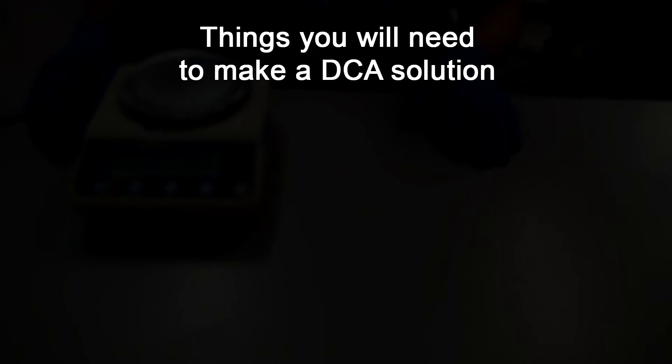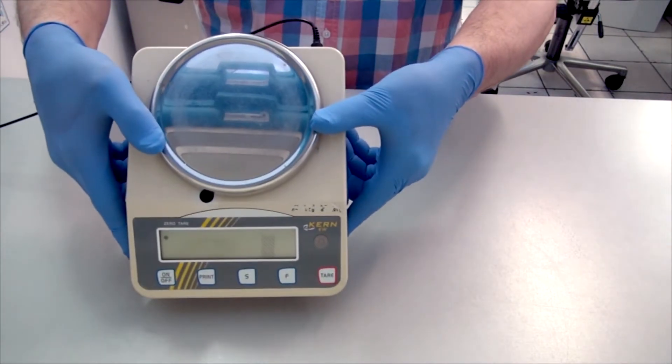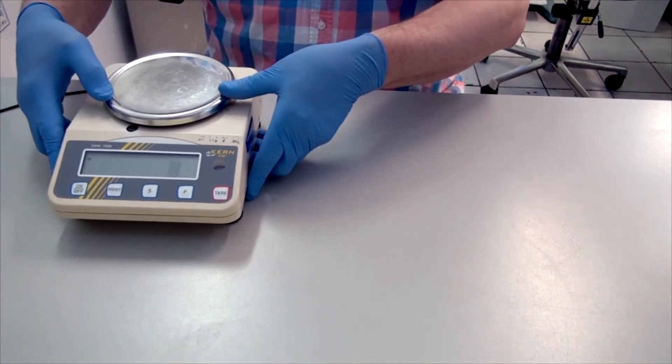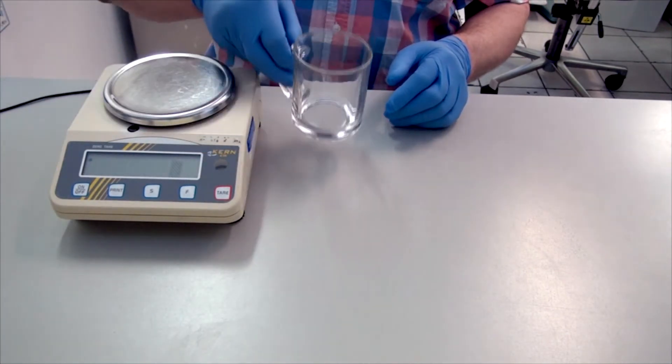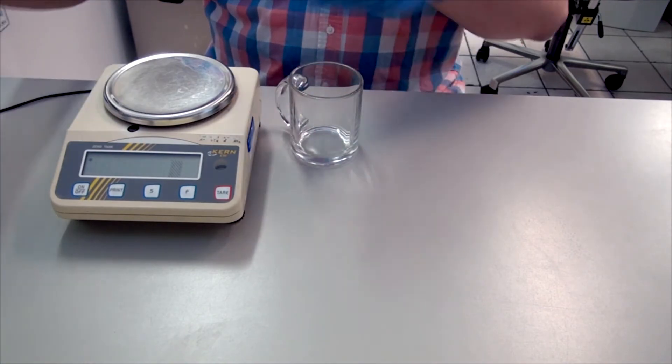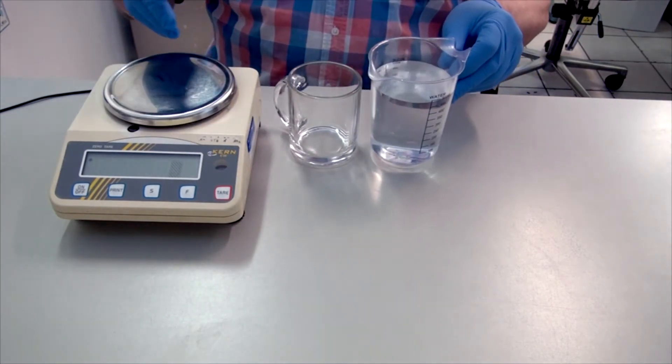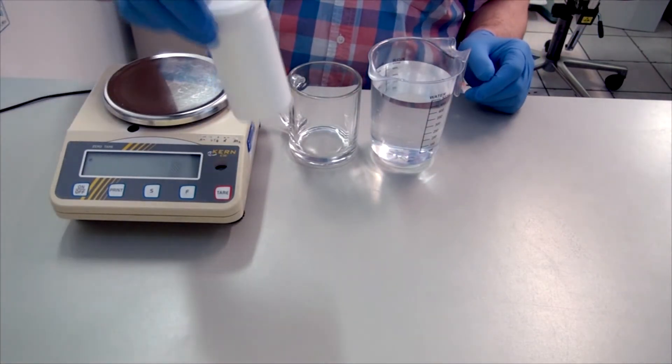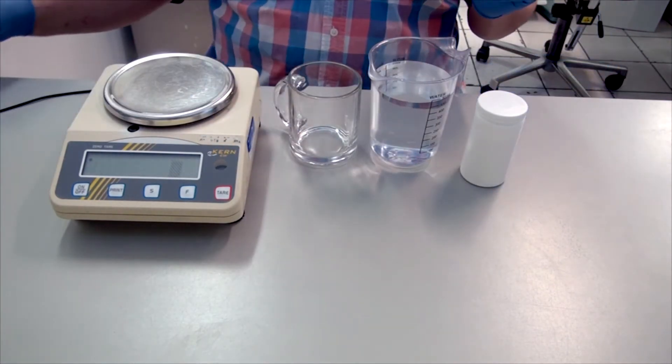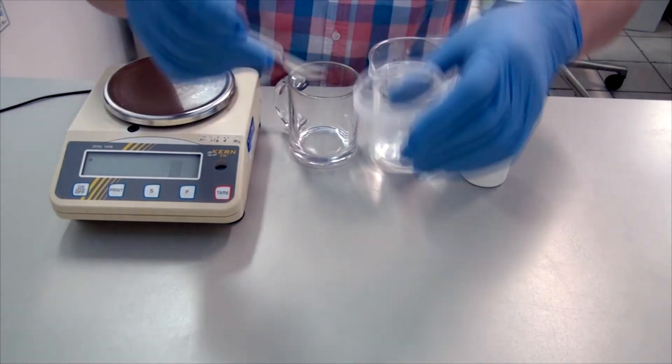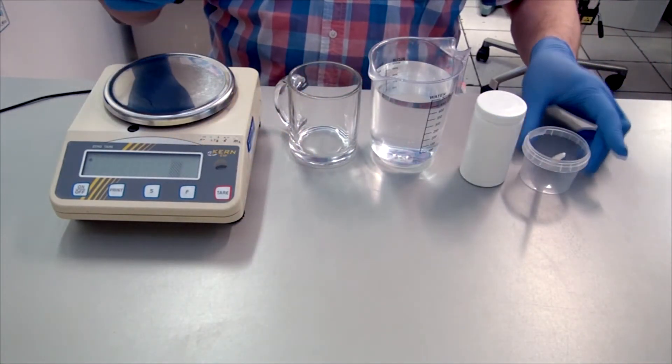Things you will need to make a DCA solution. You will need a digital scale. You can get one online or at your local health food shop. You'll also need a glass to dissolve your sodium dichloroacetate in. You'll need room temperature water, just not too hot to avoid ruining your DCA. Some quality sodium dichloroacetate and finally a teaspoon and a container for measuring the powder and mixing your solution.